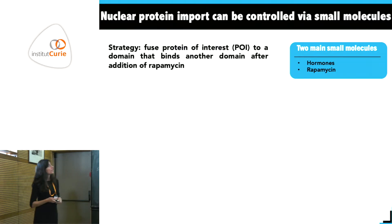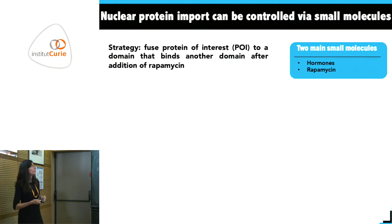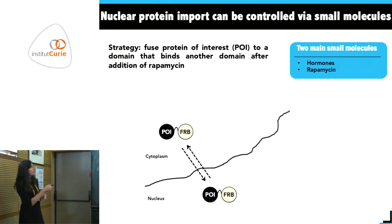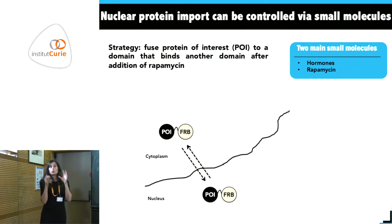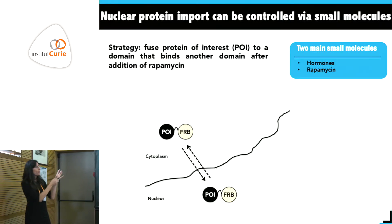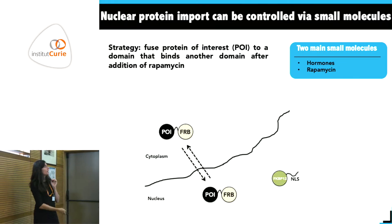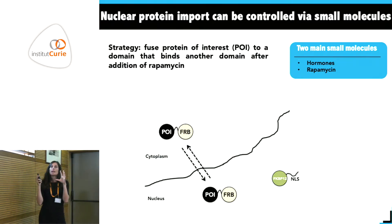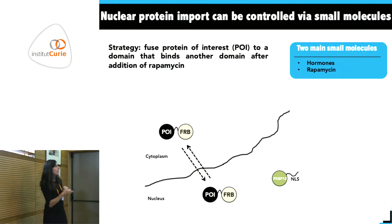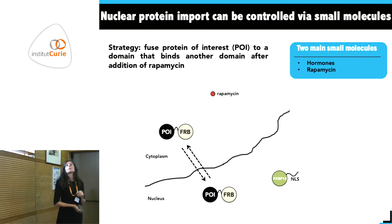The other approach uses two domains that interact via rapamycin. The protein of interest is fused to one domain and shuttles between compartments, while its partner domain has an NLS and is always accumulated inside the nucleus. When rapamycin is added, the two bind.